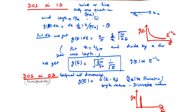The density of state in zero dimension applies to structures confined in all dimensions, such as nanoparticles or quantum dots. In this case, G(E) is represented by a delta function: δ(E − E₀). There is only one discrete value at E = E₀, and G(E) is zero for all other energy values.